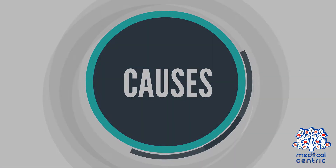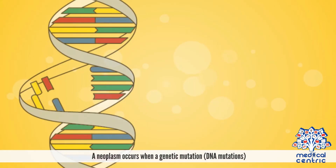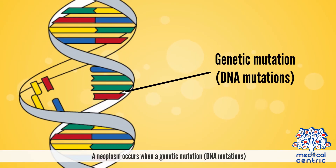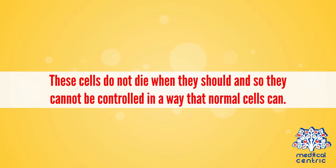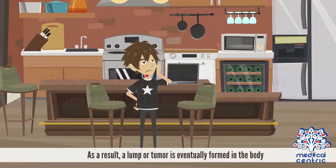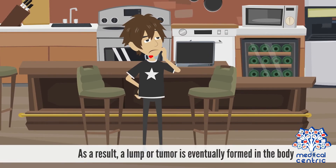Causes: A neoplasm occurs when a genetic mutation or DNA mutation causes an abnormal proliferation of cells in a manner that is not coordinated with the surrounding tissues. These cells do not die when they should and cannot be controlled in the way that normal cells can. As a result, a lump or tumor is eventually formed in the body.